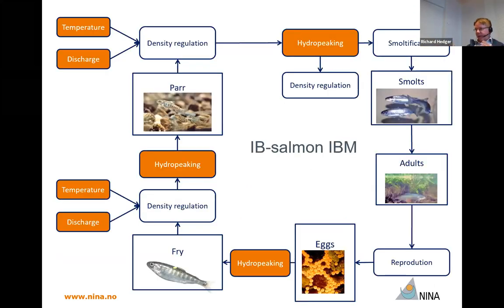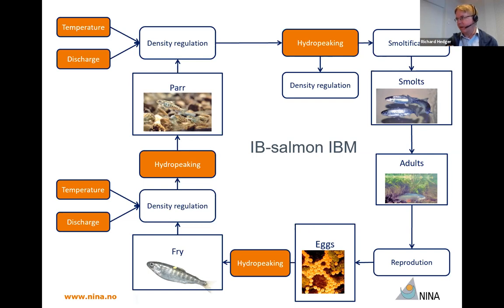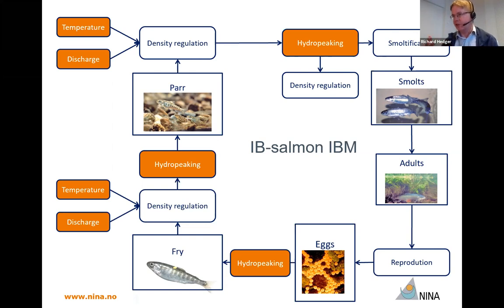The model we're using is an individual-based population model. We model individual fish as agents within the model, and we examine how they move throughout their life cycle. It begins with eggs, then swim-up fry, juvenile parr, smoltification, they go out to sea, and return to deposit eggs again. At all these stages, they're influenced by characteristics of the environment such as temperature or discharge regime, and these can be affected by external phenomena such as hydro peaking.